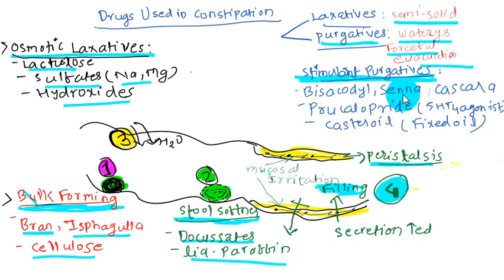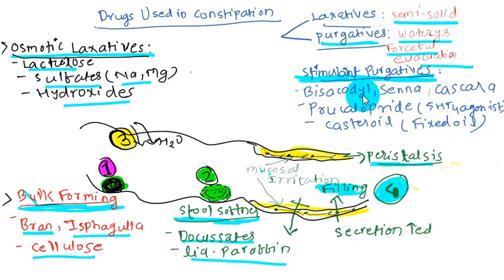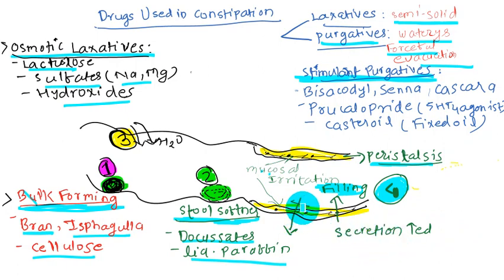Examples of stimulant purgatives include bisacodyl and senna and cascara — where bisacodyl is a diphenylmethane derivative and senna and cascara are anthraquinones — as well as prucalopride, a 5-HT4 agonist, and castor oil. Bisacodyl specifically stimulates peristalsis by mucosal irritation, activating the myenteric plexus, stimulating colonic electrolyte and fluid secretion, and inhibiting sodium and potassium transport at the basolateral membrane, reducing absorption.